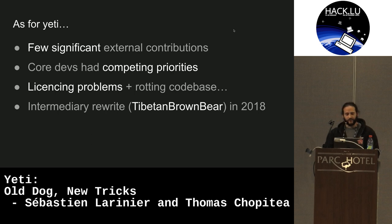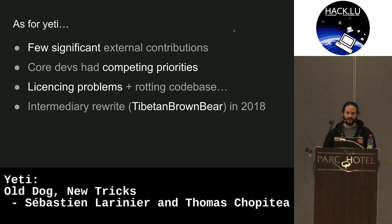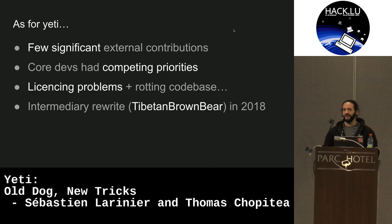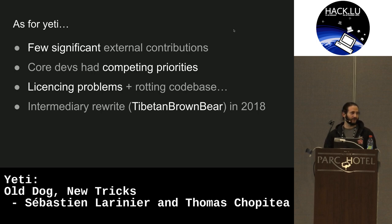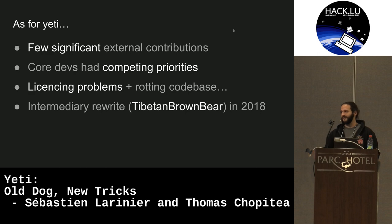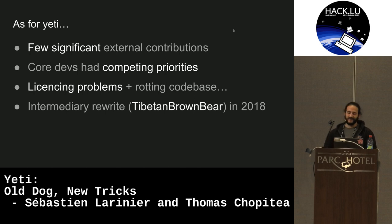In the meantime for Yeti, we had few significant external contributions. Some people contributed changes to the core that made it harder to maintain because they weren't always of the highest quality. The core developers had competing priorities; I was changing jobs. We also had licensing problems — my new job couldn't accept anything licensed AGPL, and MongoDB is licensed AGPL. So the code base started to rot, and all the dependencies were getting deprecated or abandoned. It was a little painful.